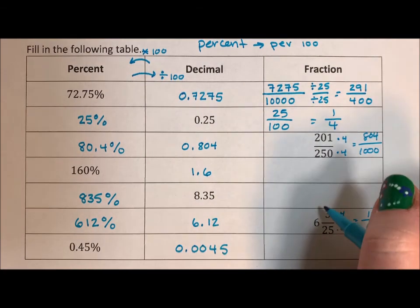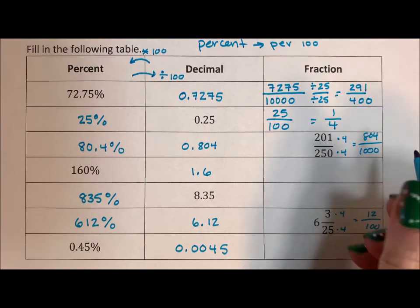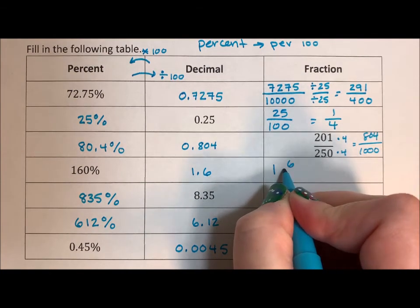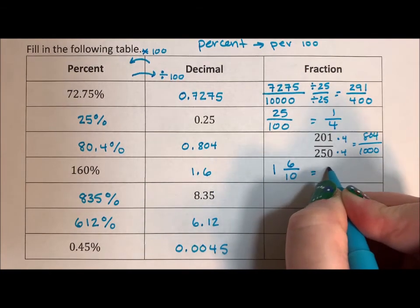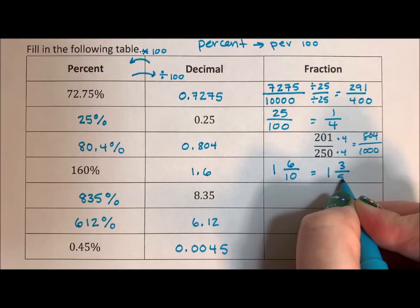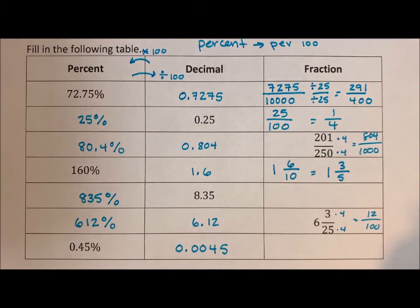So noticing that this is 6 and a fraction, I'm just going to say 1 and 6 over 10, which is 1 and 3/5. I can divide a 2 out of both of those.